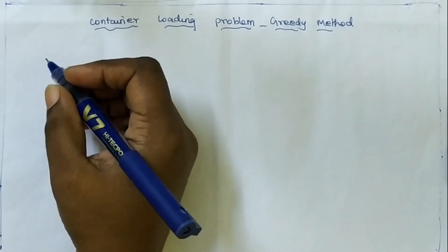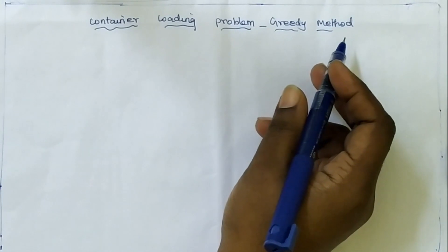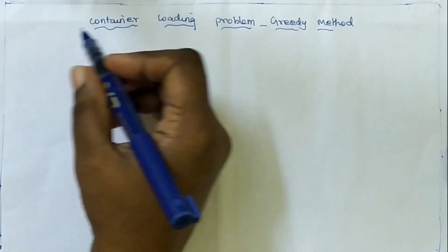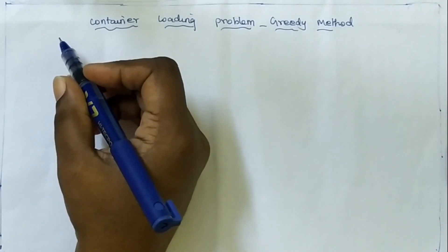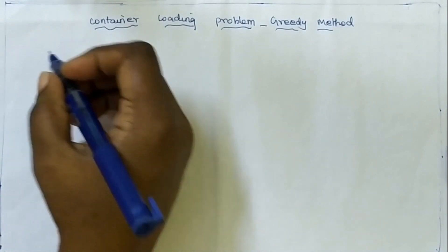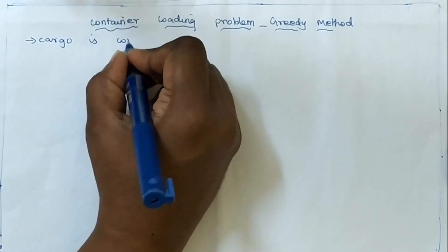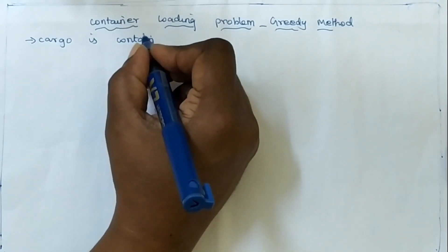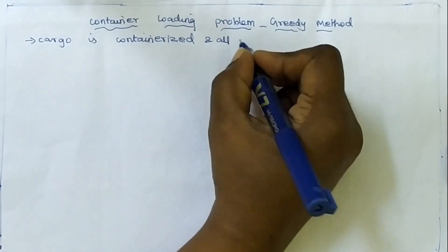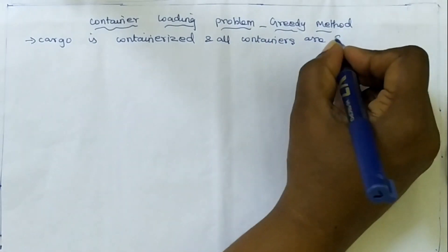In this tutorial we are going to learn about the container loading problem using the 3D method. First of all we are going to see what the container loading problem is. A large ship is to be loaded with cargo. The cargo is containerized and all containers are the same size.